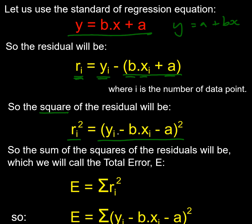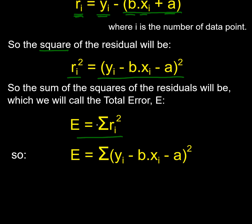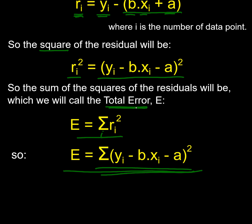If I square that expression and sum all these residuals up — there's my sigma symbol — I'm summing across all the i's. So on the right-hand side I have this sum, and we call this the total error, which I call big E. There's my formula for the sum of the squares of the residuals.